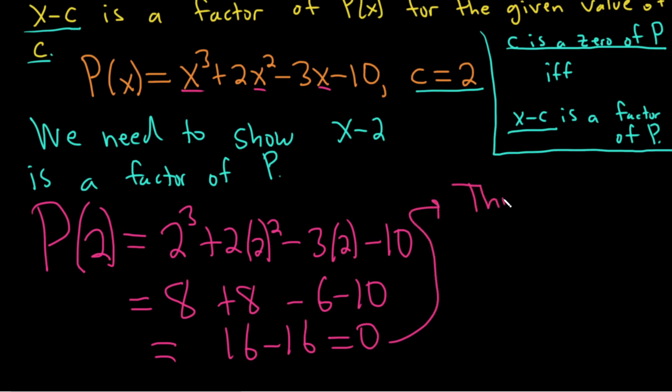So what does this mean? This means c equals 2 is a 0 of P. So by the factor theorem, x minus 2 is a factor of P. It's nice to explain stuff.